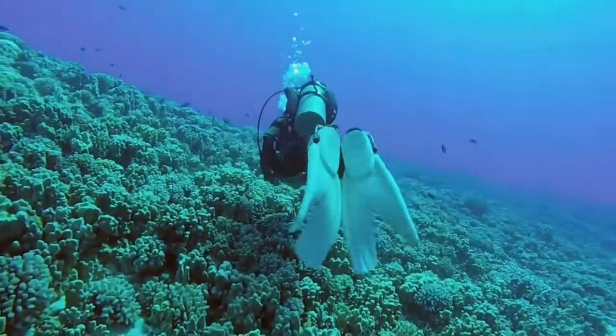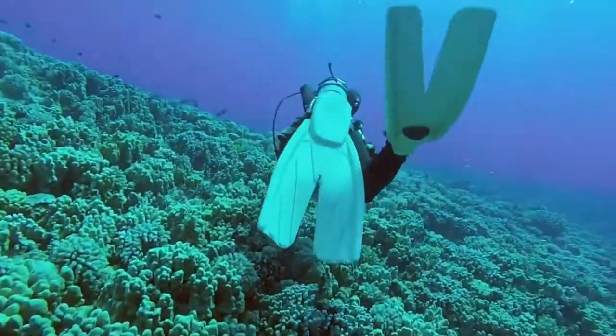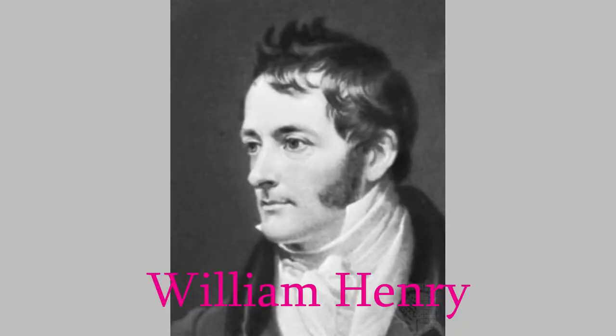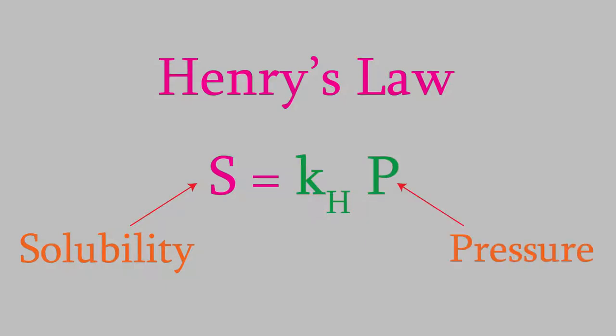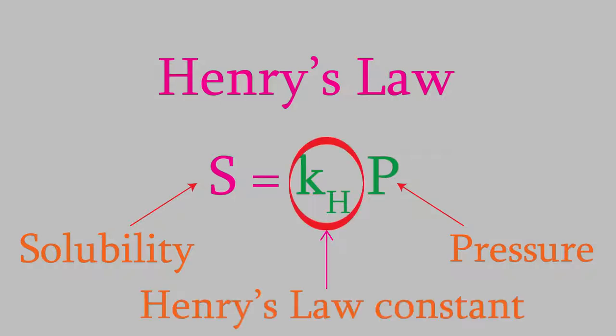The person who figured out the connection between the solubility of a gas and the pressure of the liquid was William Henry, and the relationship he discovered is named Henry's Law after him. This tells us that the solubility of a gas is equal to a constant times the pressure. The solubility is the concentration of the gas dissolved in the liquid, measured in molarity, and the pressure is measured in atmospheres. The constant is called the Henry's Law constant, and it's different for every combination of solvent and gas. You'll be given these values when you need them on a test or homework, so you won't need to memorize them.